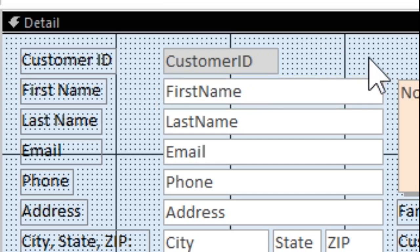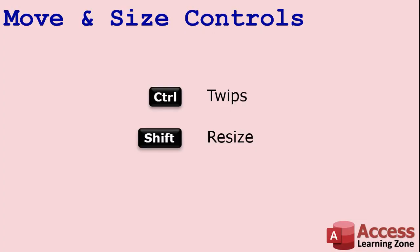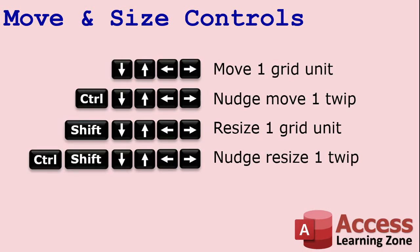So that's moving and resizing your controls using the keyboard. The arrow keys by themselves move the control one full grid amount. The Control key with arrows nudges one twip — that's called a nudge, a tiny movement. Shift with arrows resizes the control. And Control plus Shift together performs a nudge-resize — resizing in tiny twip increments.